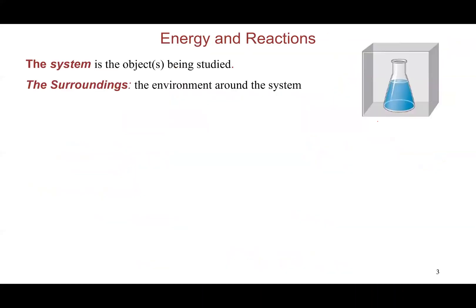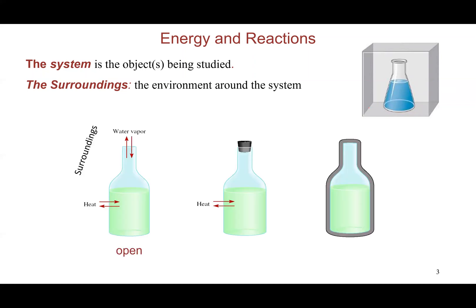We want to start by defining a couple of terminologies. The object of interest to you — the sample or the reaction that you are studying — is called the system. Anything else other than that sample or that reaction is called the surroundings. So if you're doing a reaction in an Erlenmeyer flask, that Erlenmeyer is the system, and anything else around it is the surroundings. Systems in thermodynamics can be classified into three different classes, depending on how much energy or substances are allowed to exchange between the system and the surroundings.